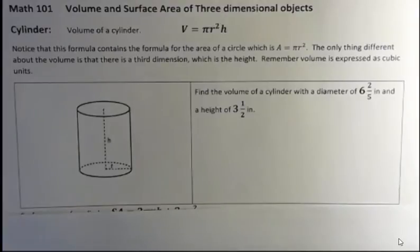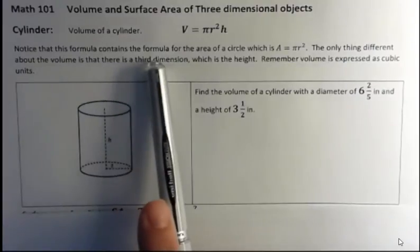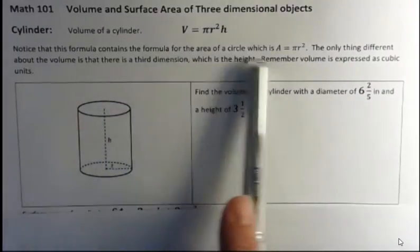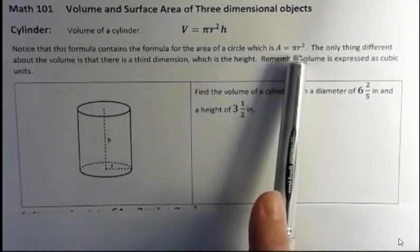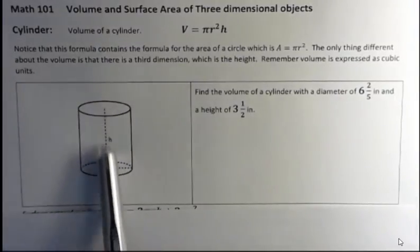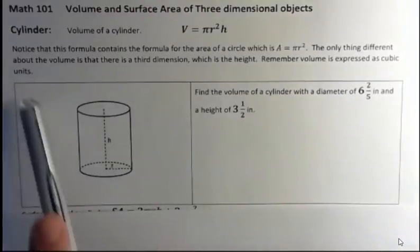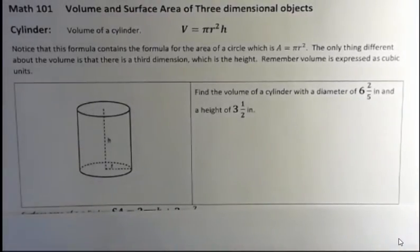The volume of a cylinder formula is pi r squared h. Notice that this formula contains the formula for the area of a circle, which is pi r squared. So we're really just looking at an area of a circle and then multiplied by the height. That gives us a three-dimensional object. And remember when we talk about volume, it's expressed as cubic units because there's three dimensions.